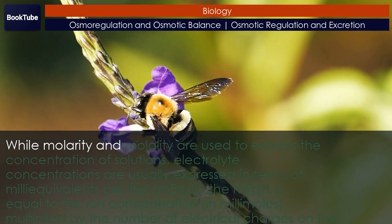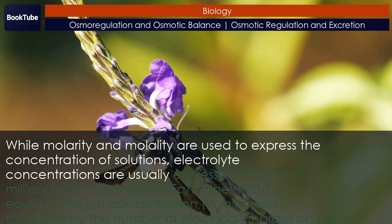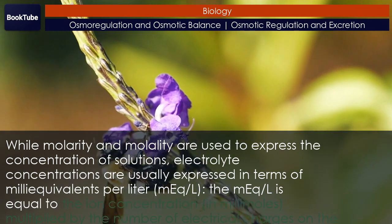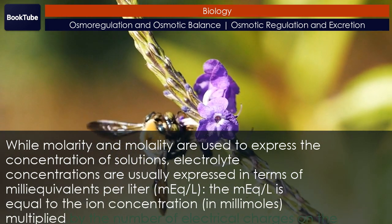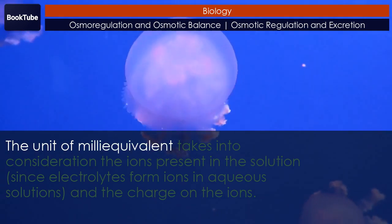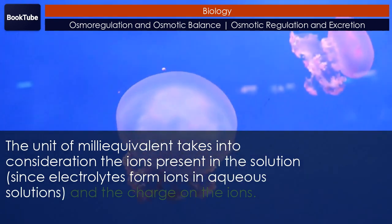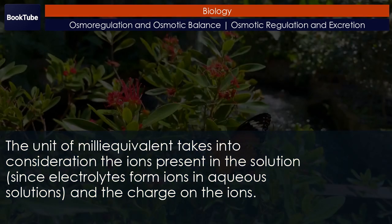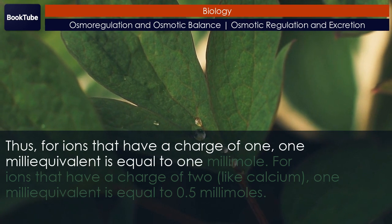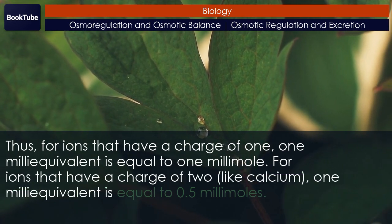While molarity and molality are used to express the concentration of solutions, electrolyte concentrations are usually expressed in terms of milliequivalents per liter (mEq/L). The mEq/L is equal to the ion concentration in millimoles multiplied by the number of electrical charges on the ion. The unit of milliequivalent takes into consideration the ions present in the solution, since electrolytes form ions in aqueous solutions, and the charge on the ions. Thus, for ions that have a charge of 1, 1 milliequivalent equals 1 millimole. For ions that have a charge of 2, like calcium, 1 milliequivalent equals 0.5 millimoles.